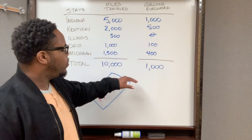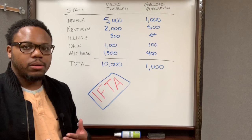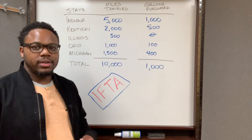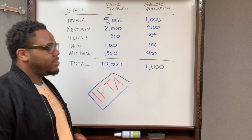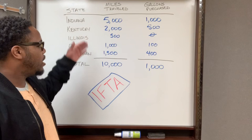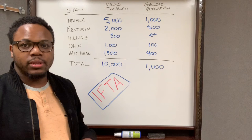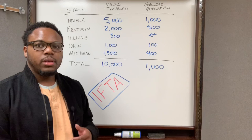Once I have this information — how many miles I traveled in each state and how many gallons of fuel I purchased in each state — I can go into the IFTA tax return and enter that information in the appropriate boxes. There's going to be somewhere on your return asking what states you traveled in. You list those states, then it asks how many miles you traveled in each state, and you enter the miles. Then you do the same thing for gallons of fuel purchased.